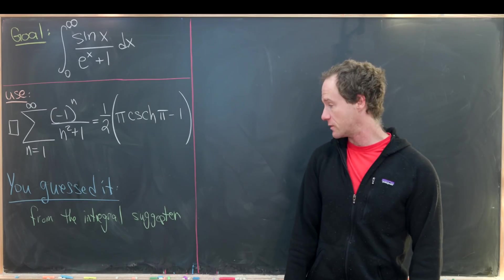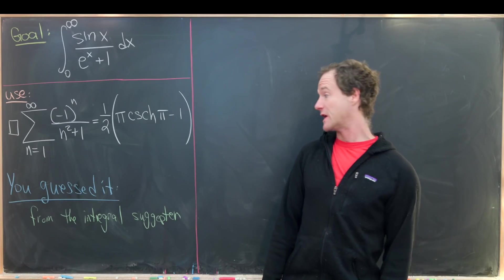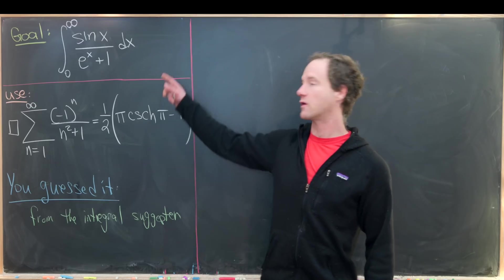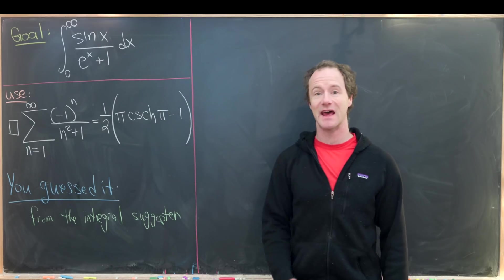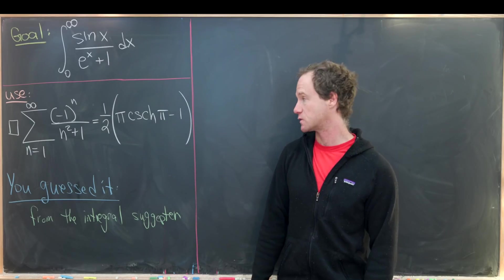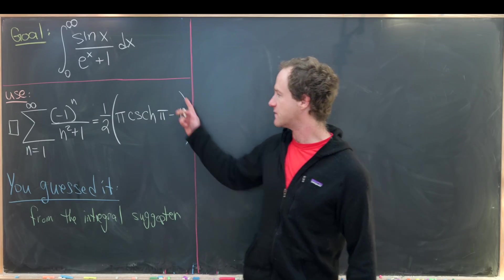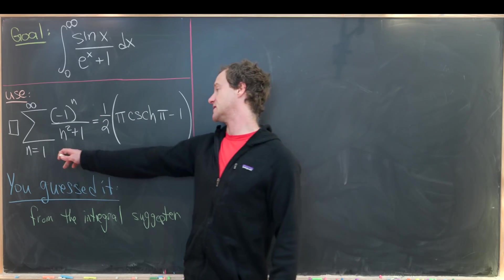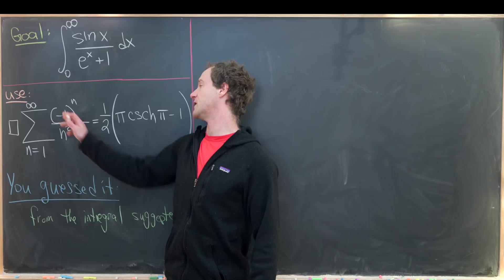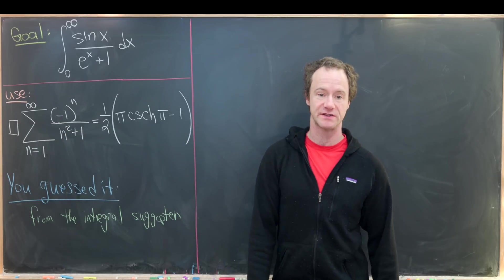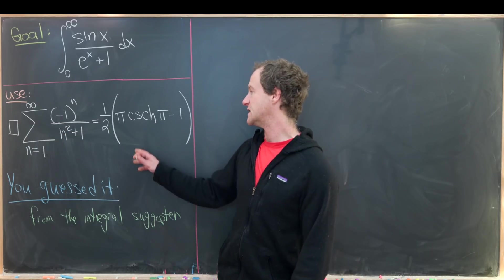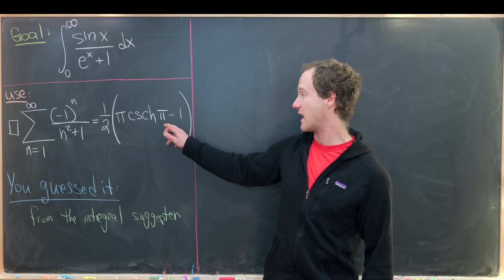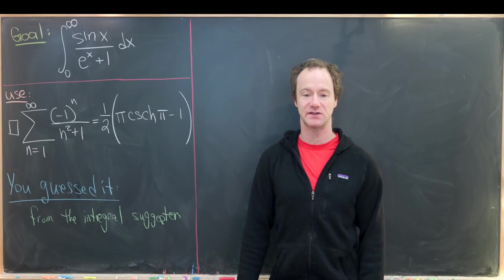Here I've got a nice integral for you, and this is from the integral suggester. Our final goal is to calculate the integral from 0 to infinity of sin x over e to the x plus 1. We're going to use the following infinite sum as a tool, which we will prove: the sum as n goes from 1 to infinity of minus 1 to the n over n squared plus 1, equal to half pi times the hyperbolic cosecant evaluated at pi minus 1.